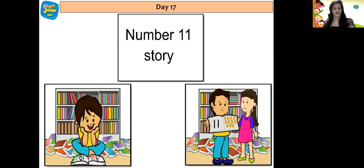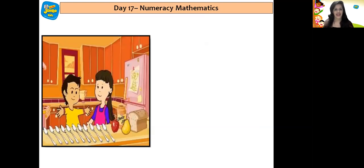They started playing a game to collect 11 objects available in the kitchen. They went towards the kitchen and they collected 11 spoons. Yes children: 1, 2, 3, 4, 5, 6, 7, 8, 9, 10, 11.